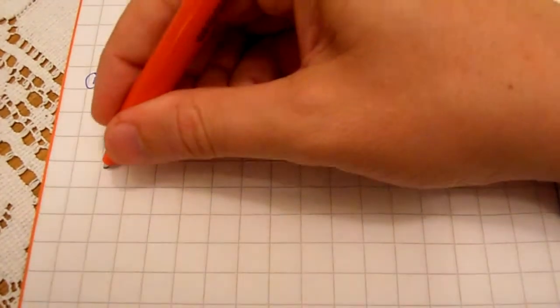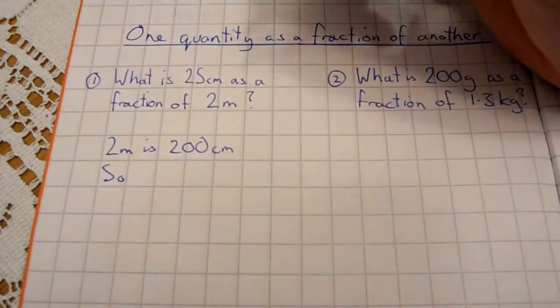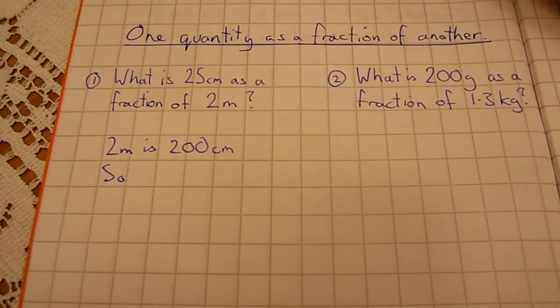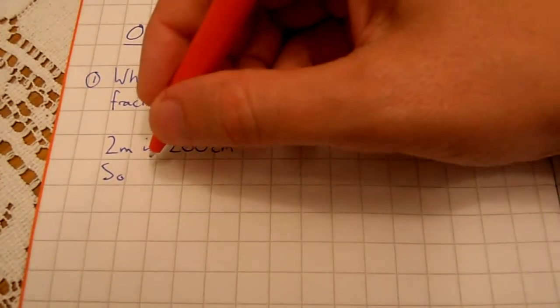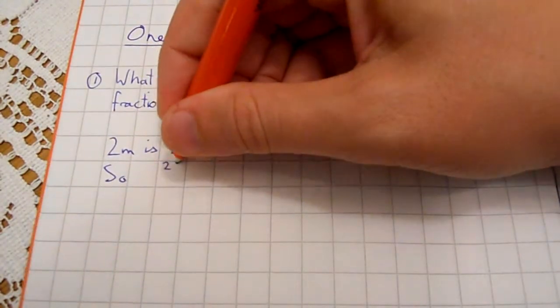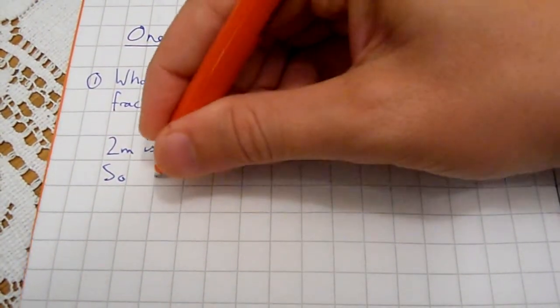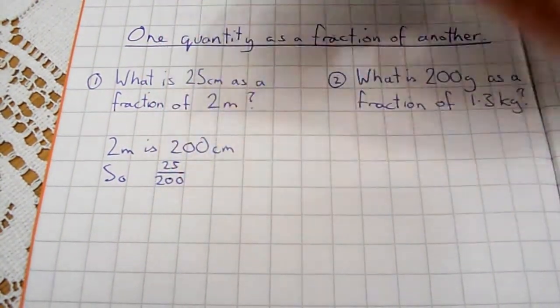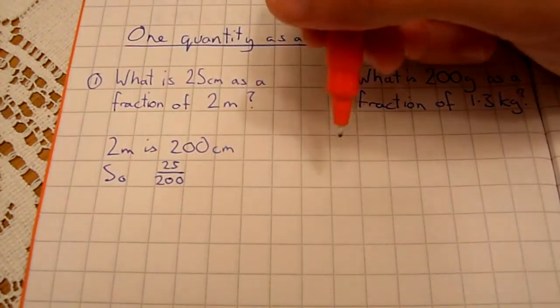So, writing one quantity as a fraction of the other, what we've got is 25 centimetres as a fraction of 200 centimetres, or 2 metres is written like that.